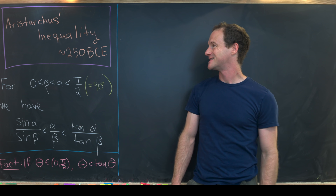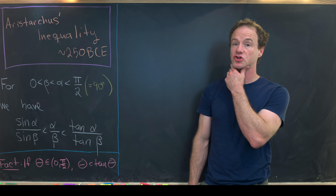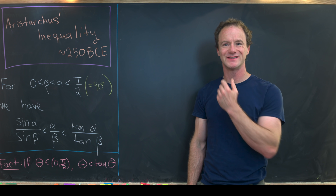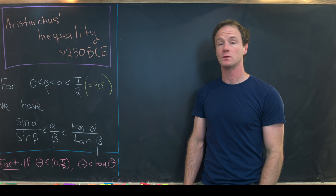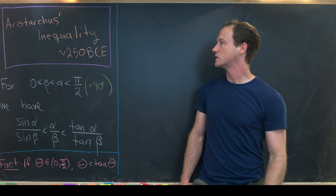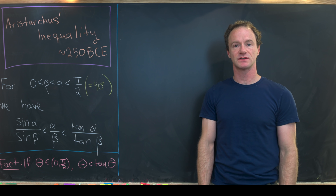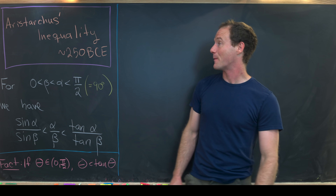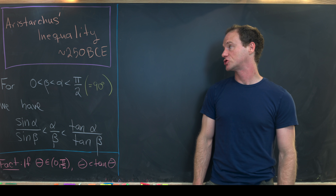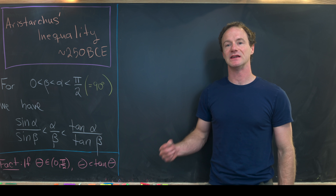Here I've got this nice inequality involving trigonometric functions that's over 2,000 years old. It's attributed to Aristarchus and it's from about the year 250 BCE.